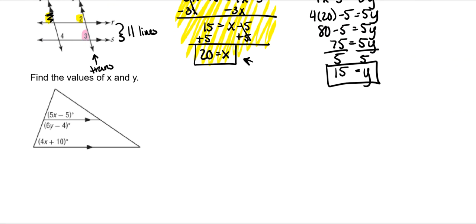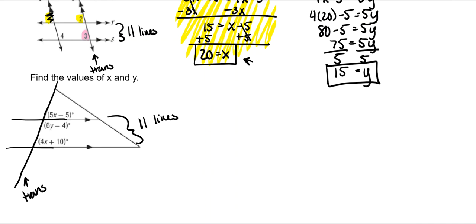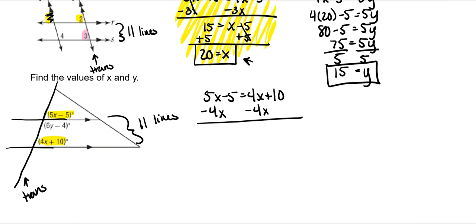On this example, you need to extend the lines. This is your transversal and these are your parallel lines. We have x's and y's, so let's focus on the x's first and see how they're related. They're on the same side of the transversal and they skip over that one, so they're corresponding — set them equal to each other. Subtract 4x from both sides: this gives me x − 5 is equal to 10. Add 5 to both sides, and x is 15.